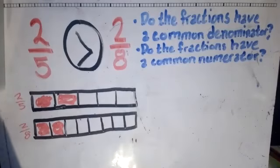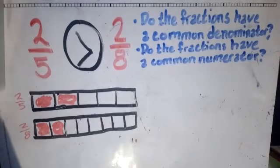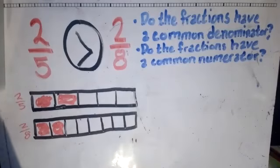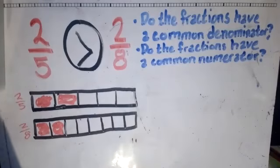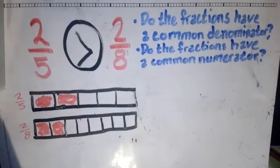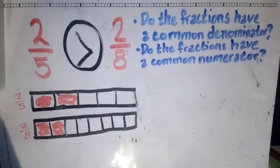These two pieces getting shared with two people versus shared with eight people. So when we have like or common numerators, the fraction with the smaller denominator is going to be the greater fraction. So we now know that 2/5 is greater than 2/8, or 2/8 is less than 2/5.